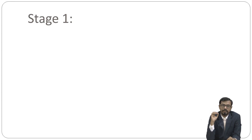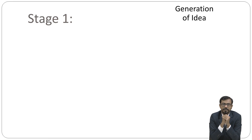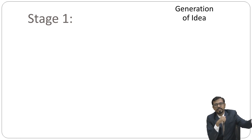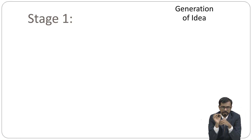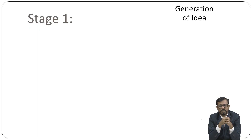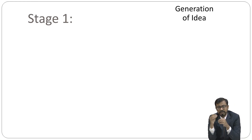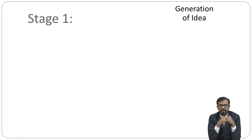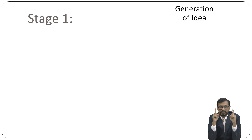Stage 1 is the Generation of Idea. In the first example, there is a man crossing the road. You look towards him and you see that a vehicle is coming towards him and the person is unaware — he does not know he is possibly going to be hit. What would you think? You might want to save the person. So the first thought that comes to your mind — save this man — is the idea generated in your mind. That is the first stage: the Generation of Idea.